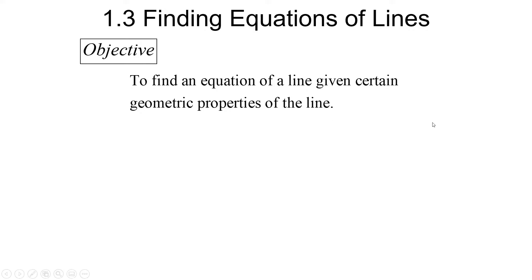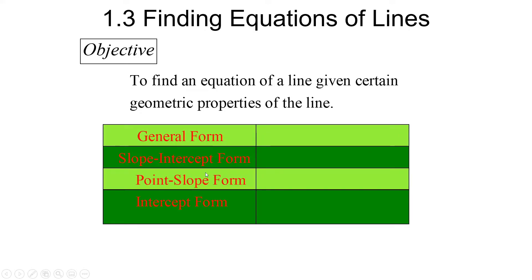Let's talk about the four forms of a linear function. First, general form: AX plus BY equals C. Remember one very important thing — A and B cannot be fractions, and A cannot be negative. So essentially, A has to be a natural or counting number, and B has to be an integer. No fractions on the left. You can have a fraction on the right. You could also flip-flop this — the AX plus BY on the right-hand side and the C on the left-hand side.